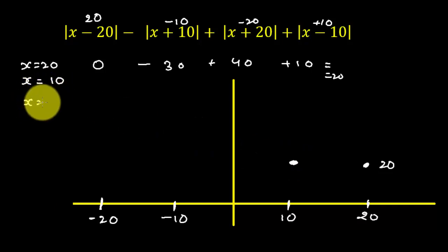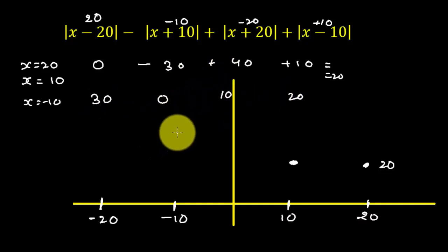Solve x equal to minus 10. That is minus 10 is 30, is 0, minus 10 is 10, minus 10 is 20. So it is nothing but 60. So we will get this one is 60. When x is minus 20, we will get again 60.